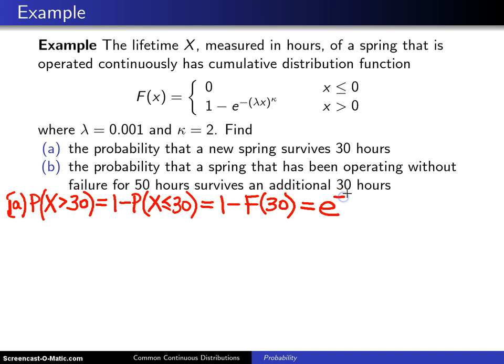So this will be e to the minus lambda, which is 0.001 times x, and x in this case is 30, raised to the kappa power, and kappa is equal to 2.